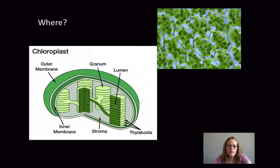The lumen is important. It's semi-liquid. And then you can see that a stack of thylakoids is called a granum. And then in between the granum or the grana is a liquid, a semi-liquid material called stroma.